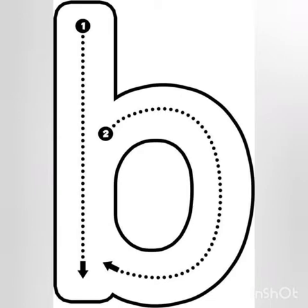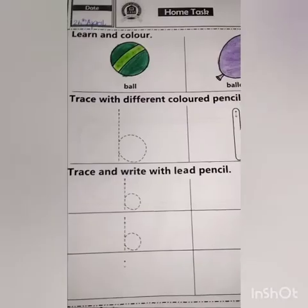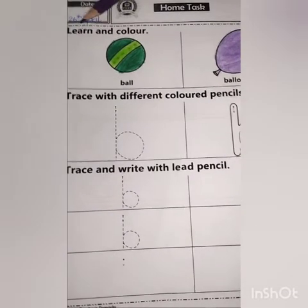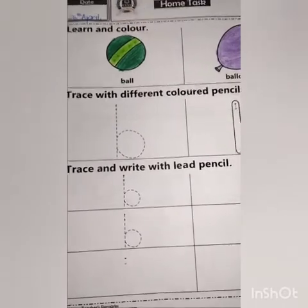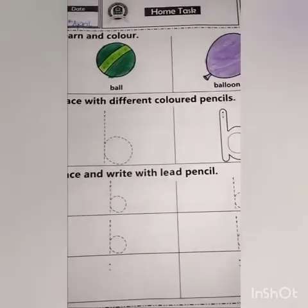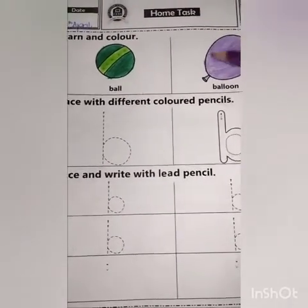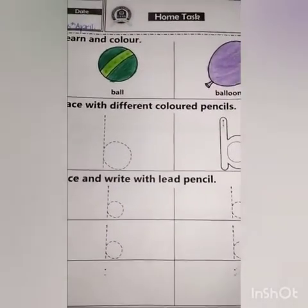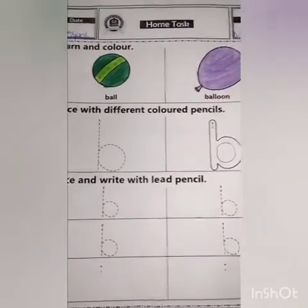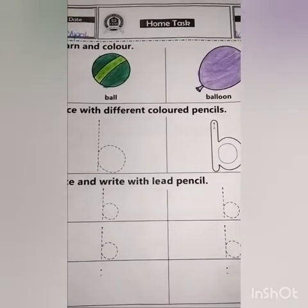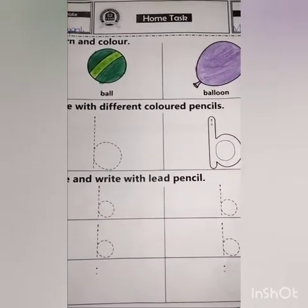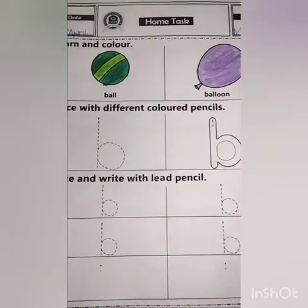Dear students, today we have to do tracing and independent writing of B. Your first question is learn and color. First question is learn and color. When you see it, you have to color here and learn what the things are.